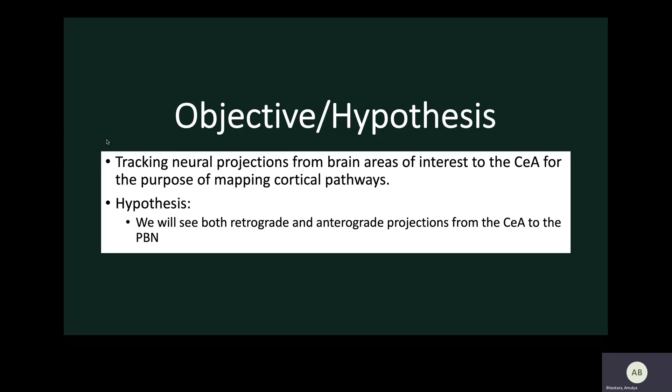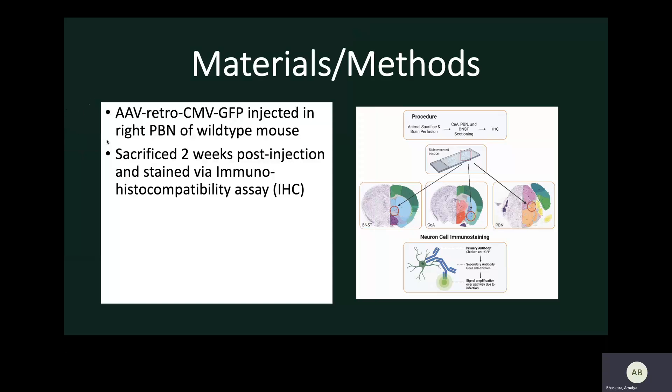Our hypothesis was that we would see both retrograde and anterograde projections from the CEA to the PBN. The way that we did this is that we injected a retrograde virus into the right PBN of a wild type mouse.